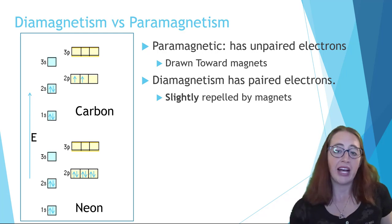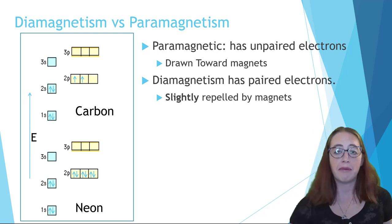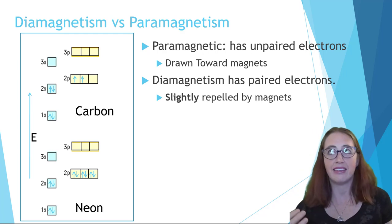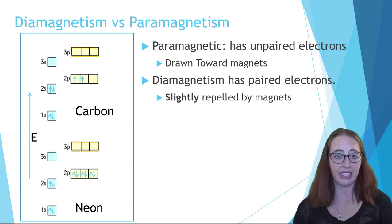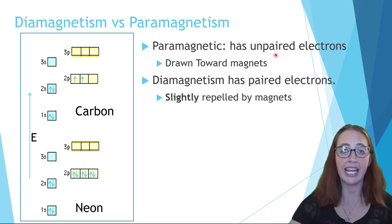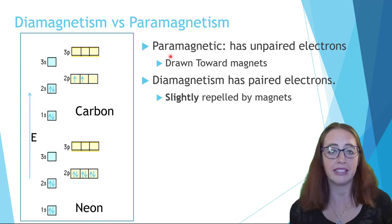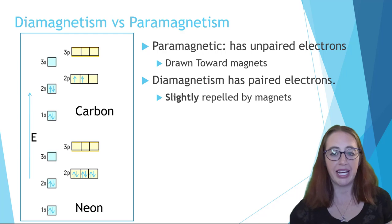We define those with unpaired electrons as paramagnetic. And yes, that's an annoying name. The pair and the para are different, right? You can see this is P-A-I-R. This is P-A-R-A. They come from different things. But yeah, you have to remember that.